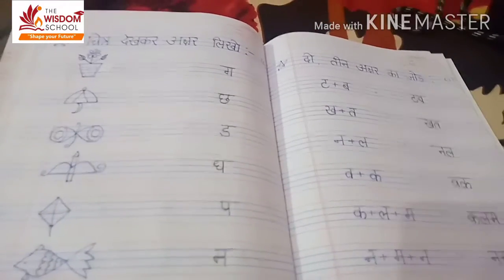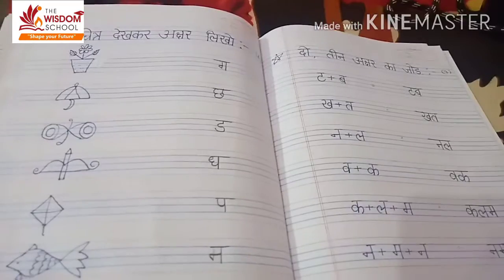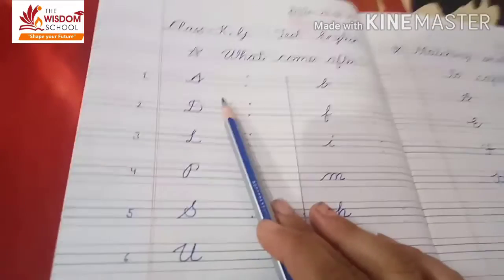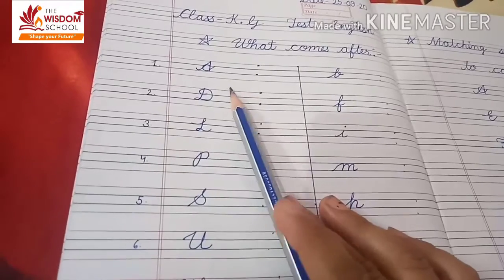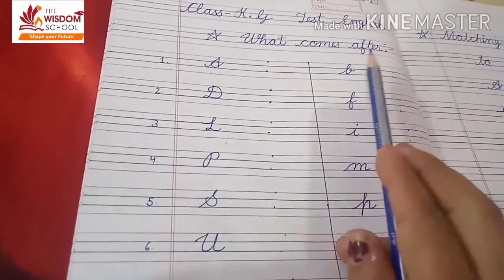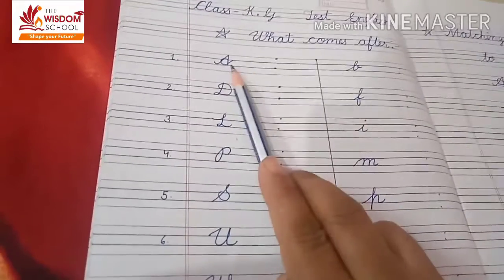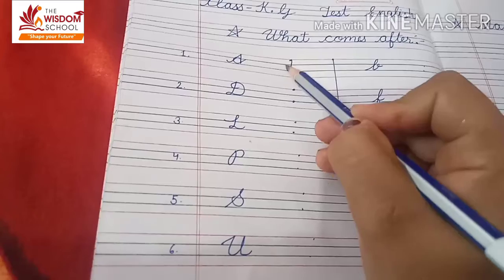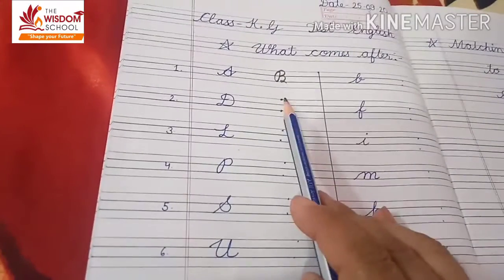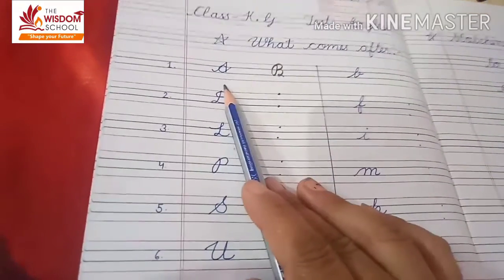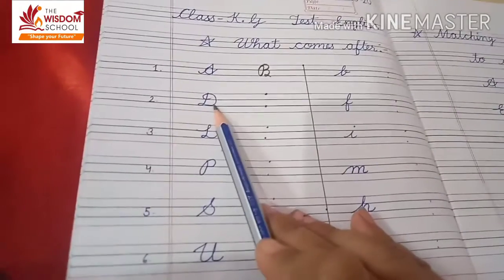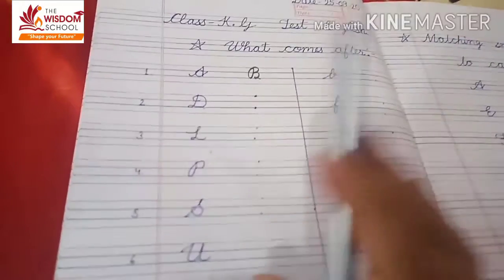Now we will do our next test — English. Hum next test English ko solve karenge. English test mein humne 'What comes after' diya tha. Humne capital A to Z mein se kuch letters write kiye hain aur small letters bhi. 'What comes after' means is letter ke baad next letter kaun sa hota hai. Kuch students ne digital writing mein likha hai — aapne cursive writing mein answer dene the. Next time yeh mistake bilkul nahi karenge.